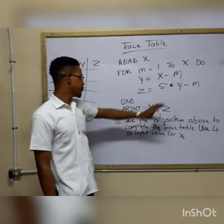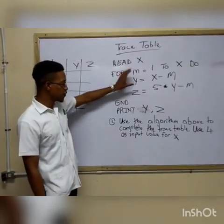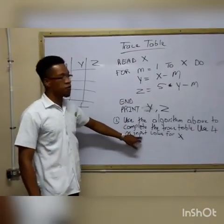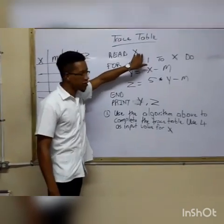So let's look at this question. The question is to use the algorithm to complete the trace table. So we are going to use 4 as the input value for x.